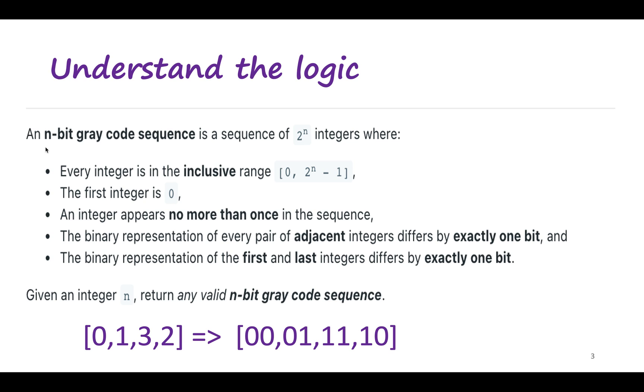We need an n-bit gray code sequence, which is a sequence of 2^n integers. There are two important aspects mentioned in the question. The binary representation of adjacent integers differ exactly by one bit. So if you look at this example, 0 and 1 differ by one bit, 1 and 3 differ by one bit, 3 and 2 differ by one bit. And the binary sequence has been listed here.